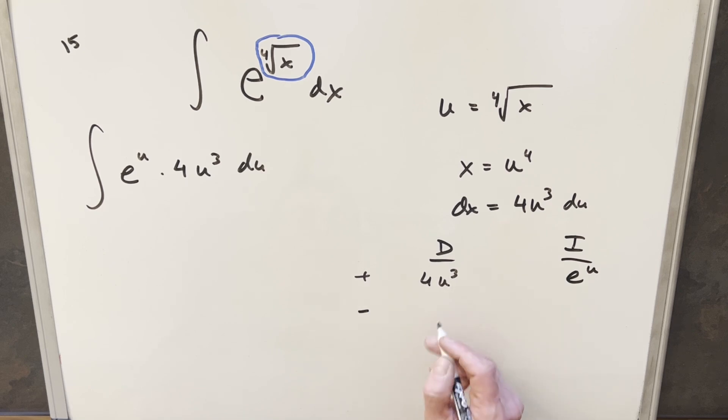So let's see, derivative here, this is going to give me 12u squared. Then doing again, this is going to give me 24u. Then derivative here is going to be 24. And then finally, 0. And then this column is real easy because everything's going to be just e to the u over here.